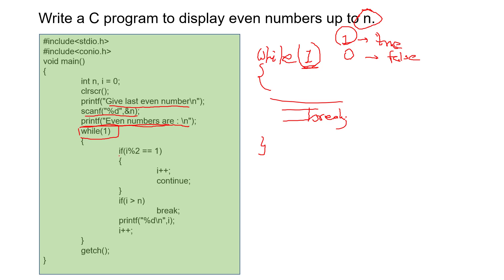Inside the body of the loop I'm writing: if (i % 2 == 1). I am not using 0 here — 1 means it will be an odd number. If I use 0, it will be an even number. If it is an odd number, I just increment the control variable i so that in the next iteration the value of i will be used.